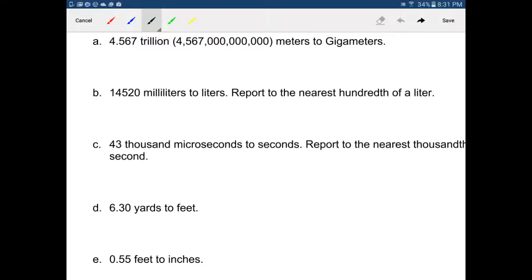What we're going to do is we are going to multiply a number. Let's say we're doing B right here, 14,520 milliliters, and we want to know what that is in liters. We're just going to take the number, and we're going to multiply it by one. But we're going to multiply it by one in a special form. So we're going to put this over one, and then we're going to multiply it times one. And what we're going to do is we're going to put milliliters on the bottom, and we're going to put liters on the top, because we want to end up with liters.